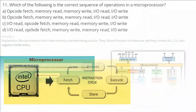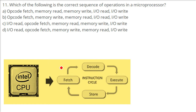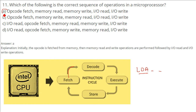Which of the following is the correct sequence of operations in a microprocessor? Whenever there is an instruction, there will be fetching, storing, reading, and writing. The correct sequence is: fetch, decode, execute, and store — this is the whole instruction cycle followed for any instruction. More specifically, the opcode fetch is done first, then memory read and memory write, then input/output read and input/output write.